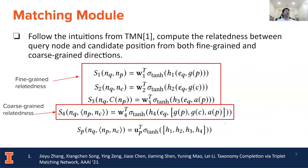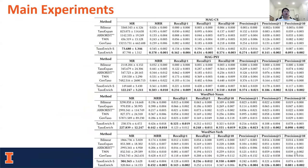We conducted extensive experiments on the taxonomy completion task across four large real-world datasets from the CS and psychology domains, as well as noun and verb datasets from WordNet. Our framework outperforms baseline methods by a large margin in terms of all evaluation metrics. In the taxonomy expansion setting, we also discover better performance across all datasets.